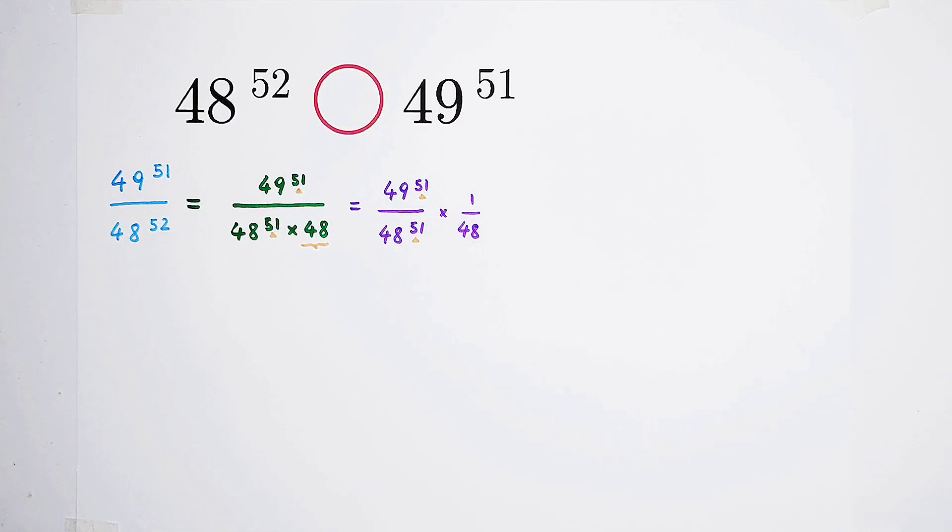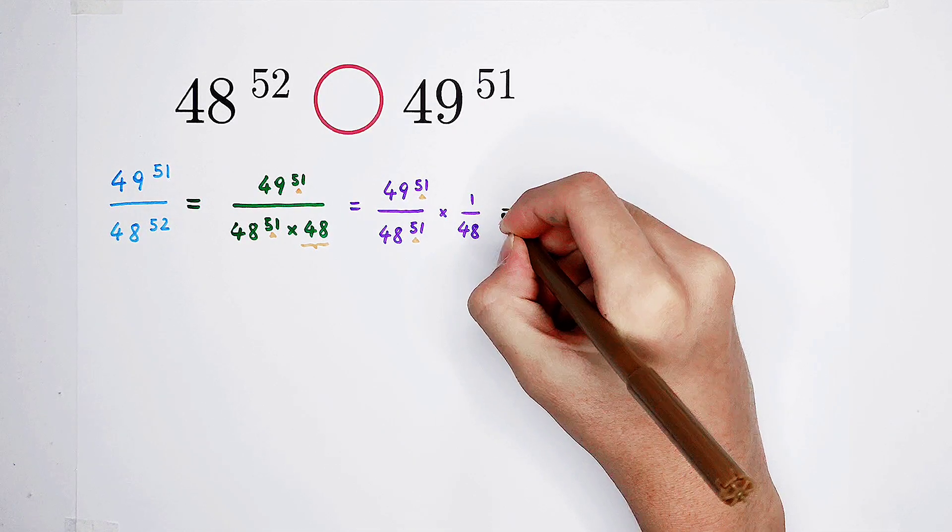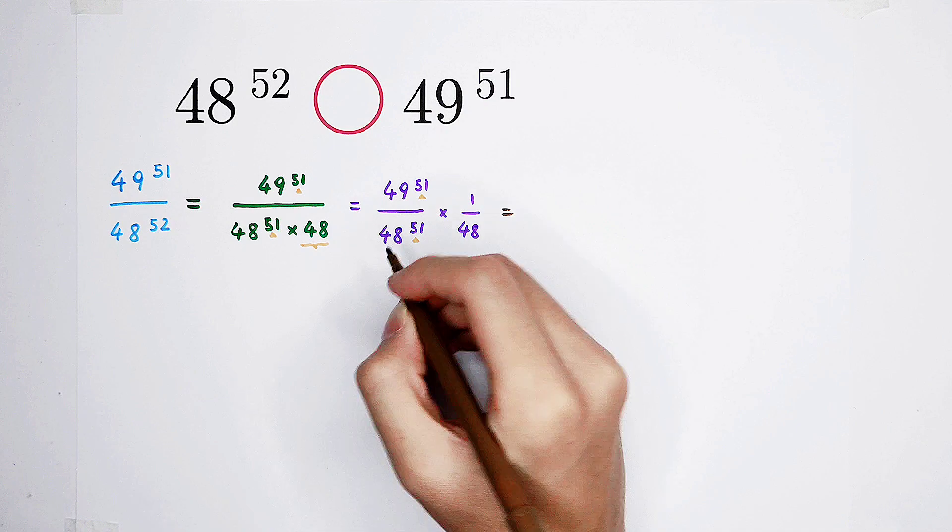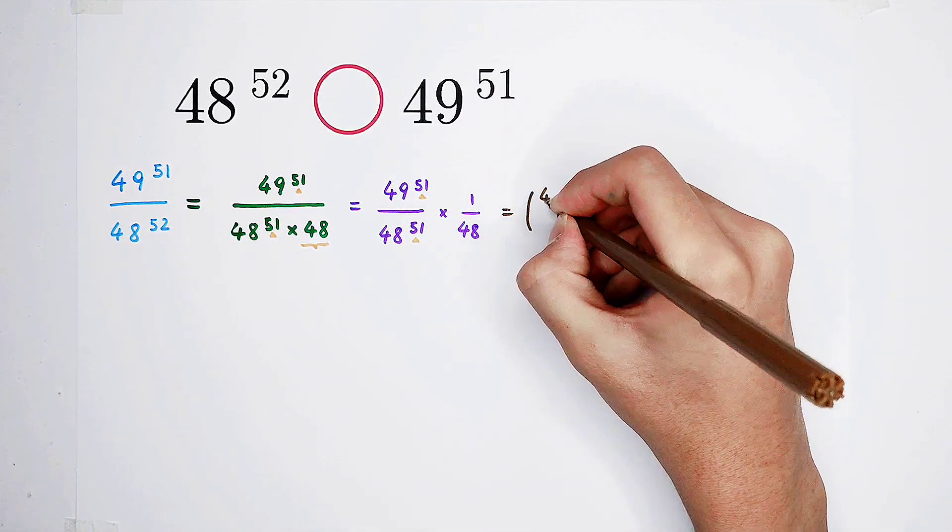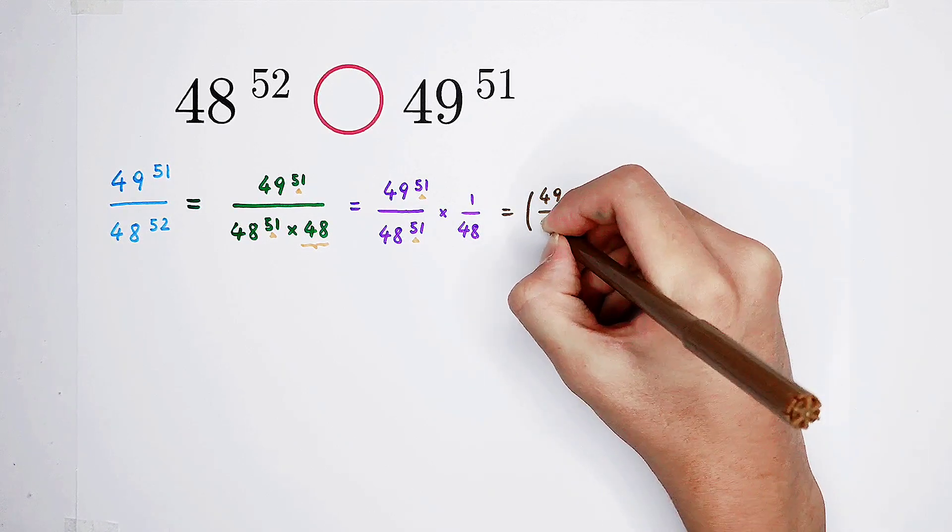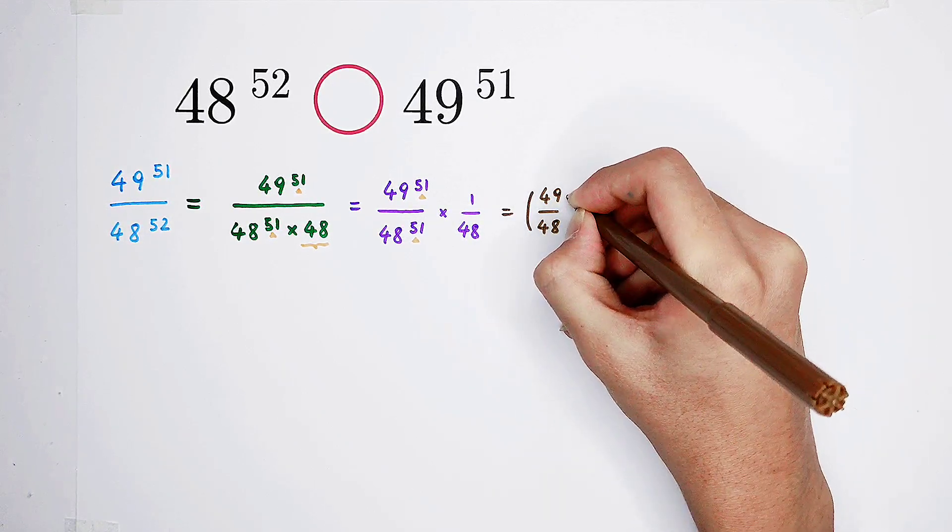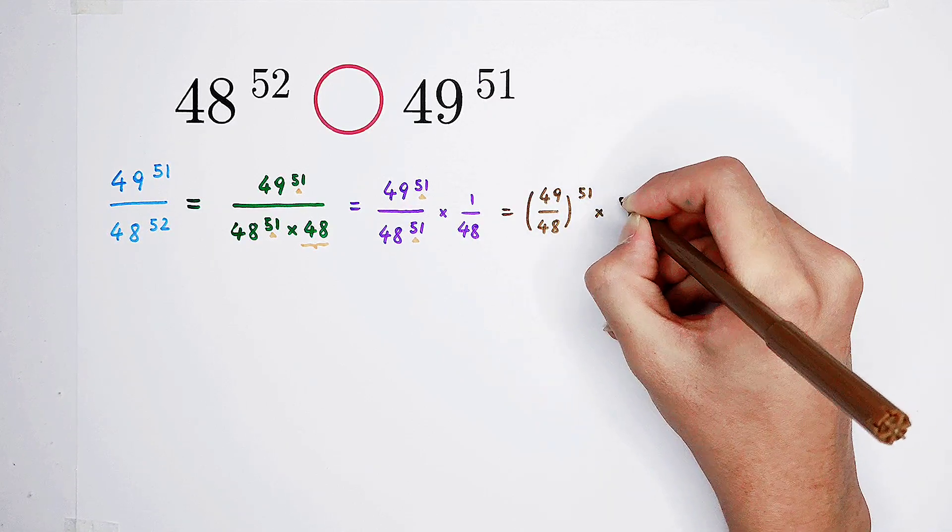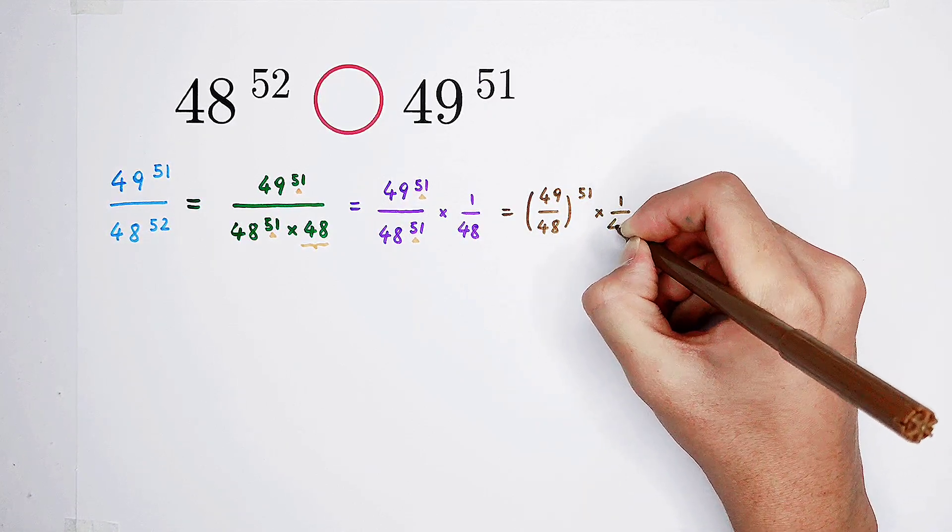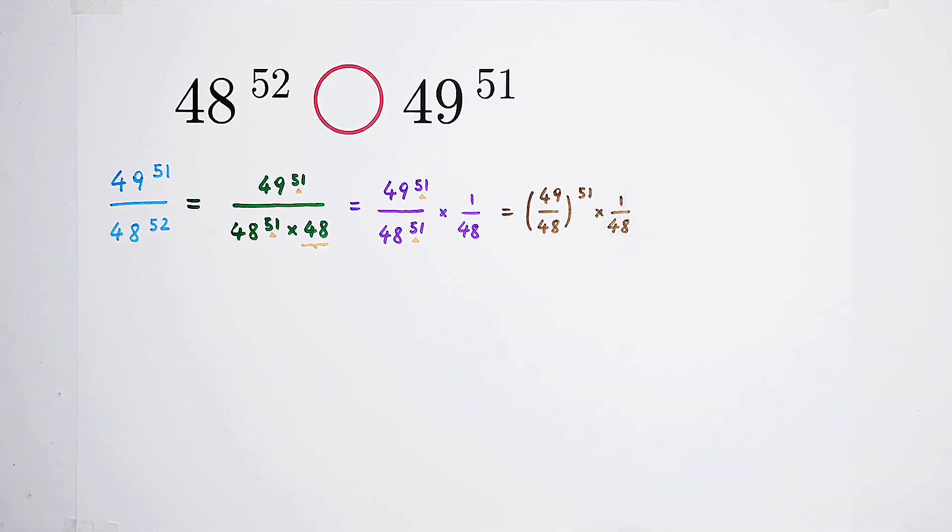Okay, then, what shall we do? 49 over 48 to the power of 51, then times 1 over 48. Of course, very good.